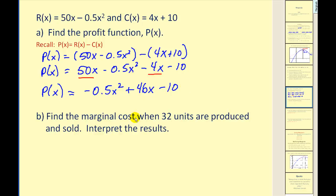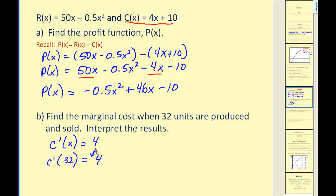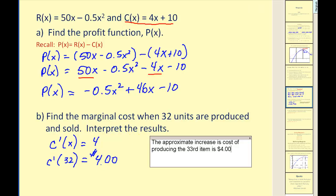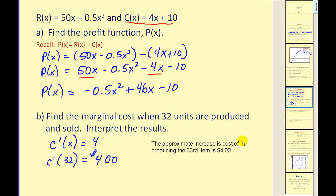We want to find the marginal cost when 32 units are produced and sold. Taking the derivative of the cost function gives us 4, so the marginal cost function is a constant. Evaluating at x equals 32 gives us $4. This tells us the approximate increase in cost of producing the 33rd item is $4. When we find marginal cost at x equals 32, it finds the increase in cost for the x plus 1th, or 33rd, item.